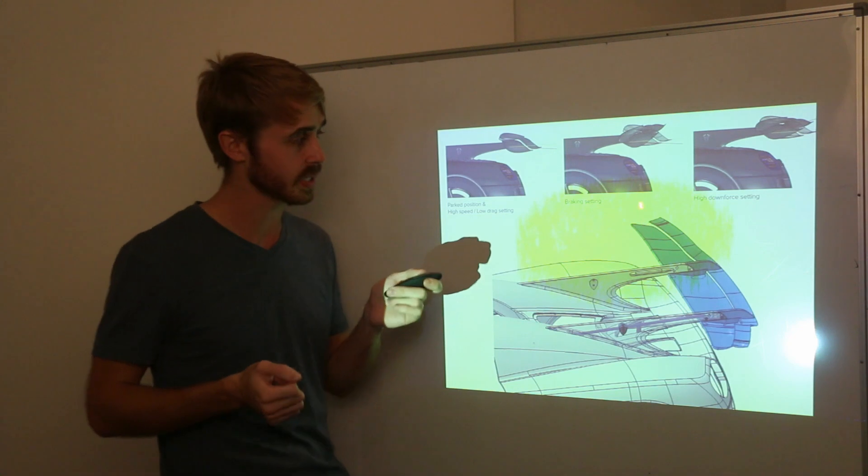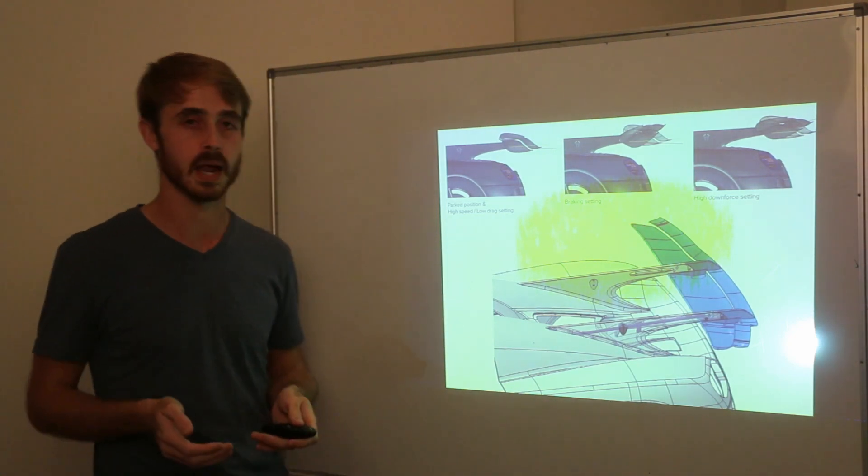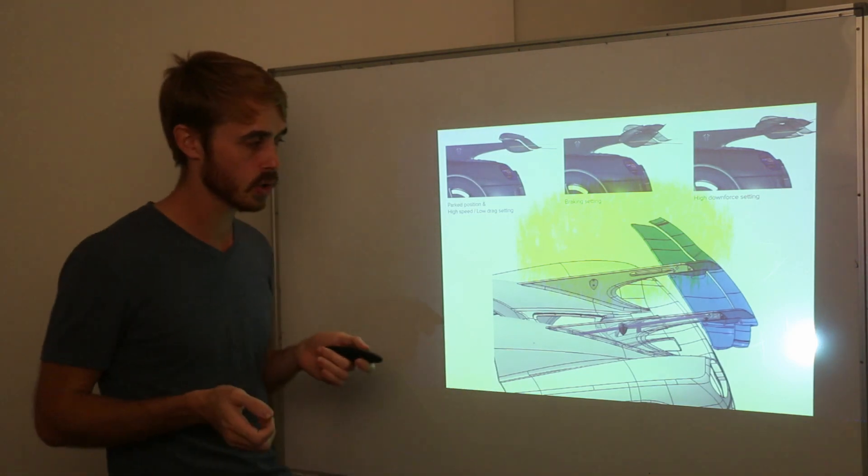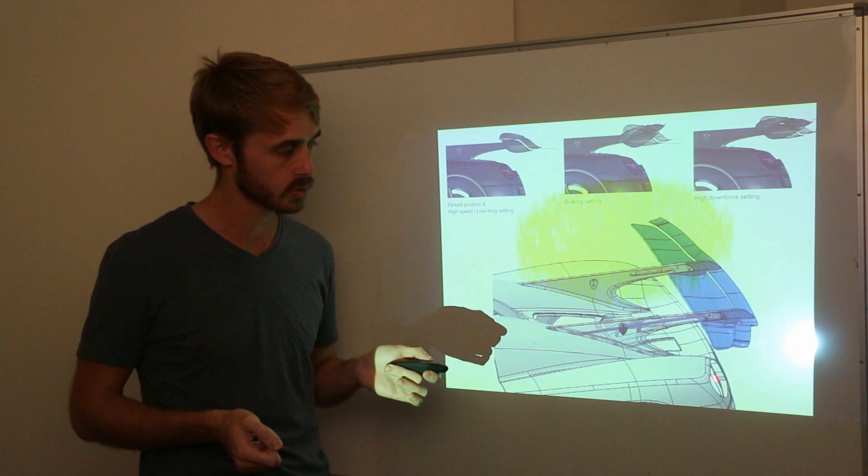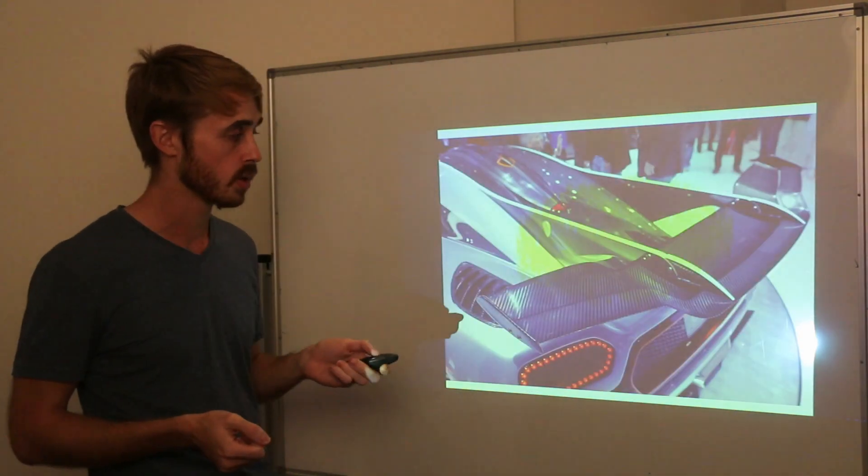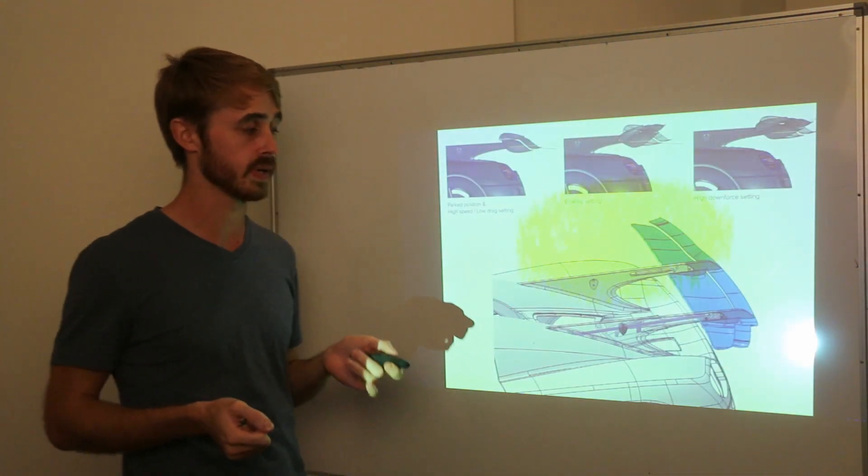One of my gripes with this wing is that I consider it too conservative. If you've got an active aerodynamics setup the whole point is that you can run a ludicrous wing and Koenigsegg hasn't really capitalized on this because they're lacking big end plates. The end plates are very small and it's just not making good use of it.